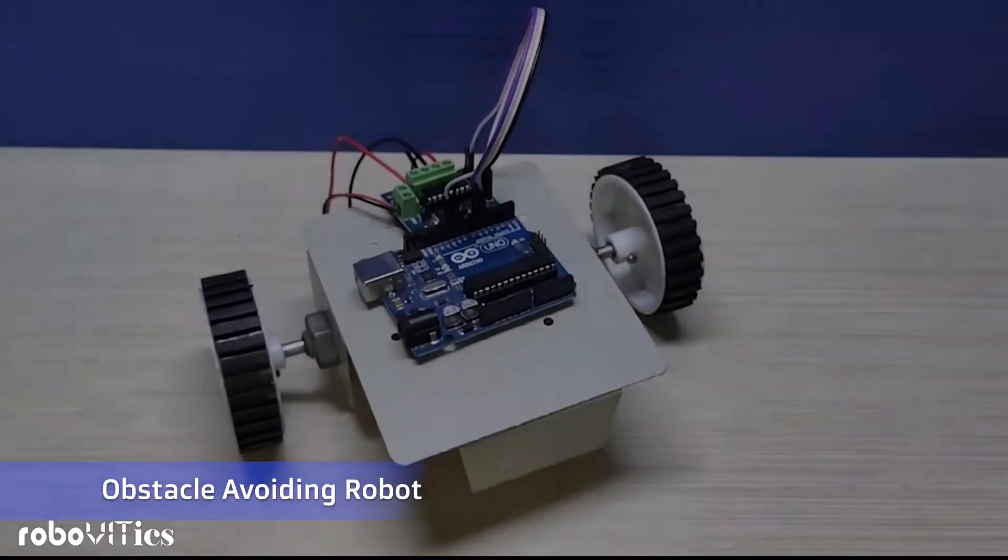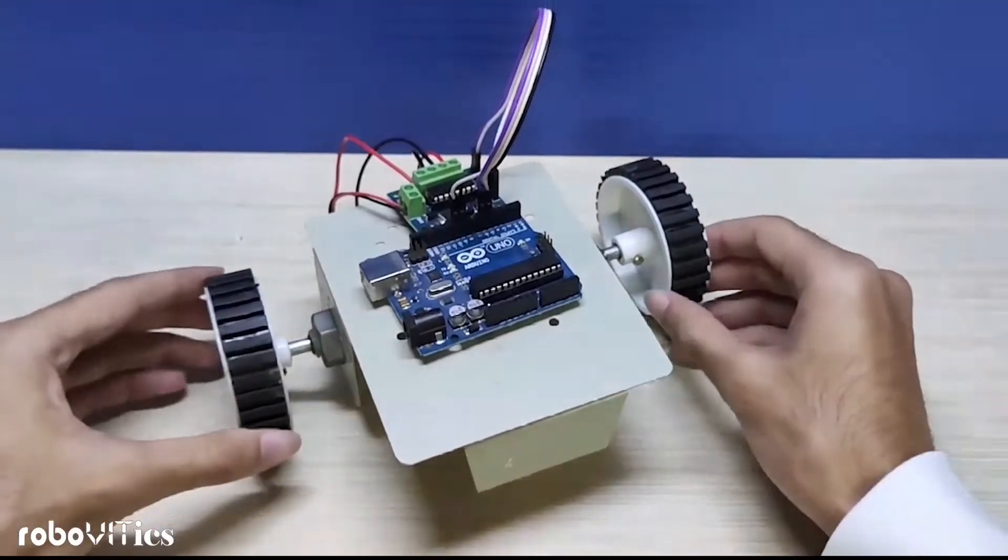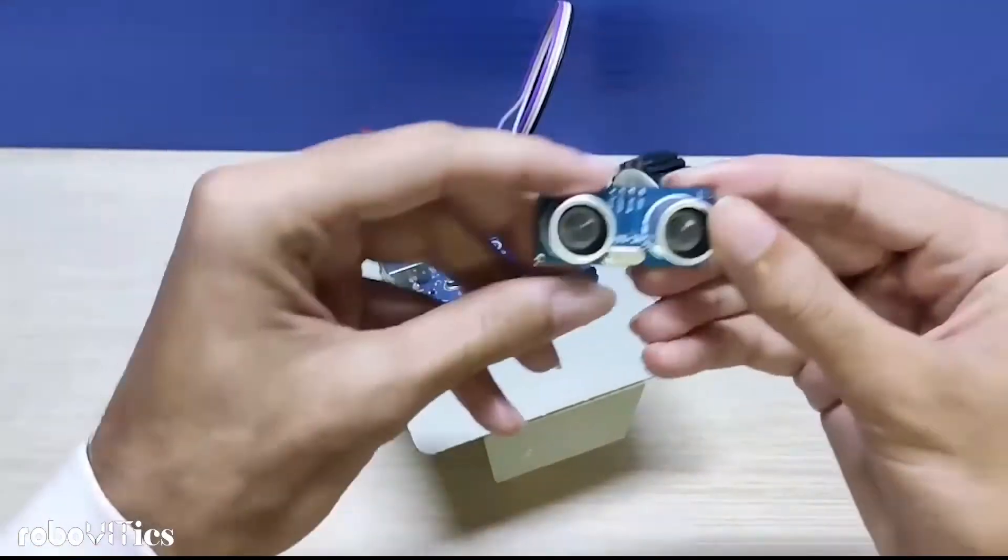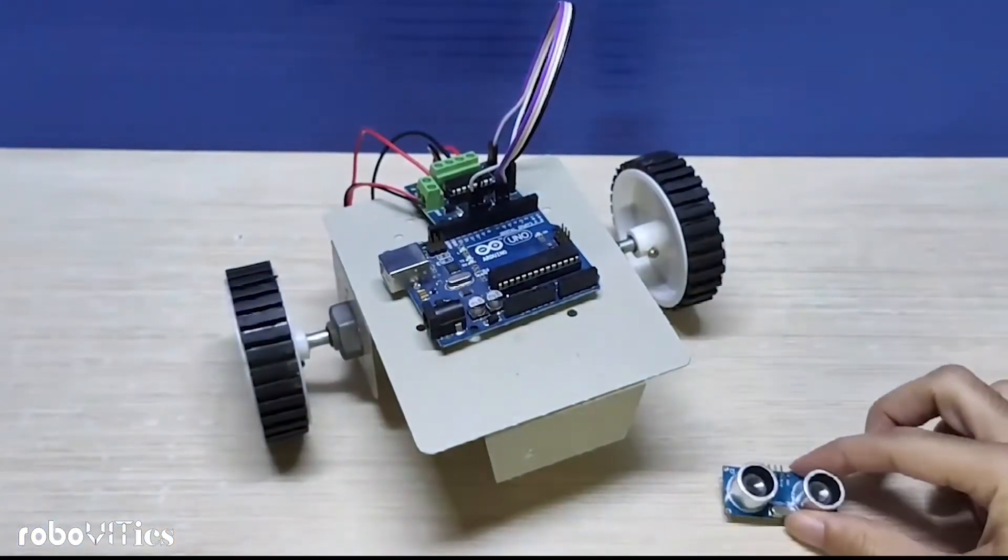Now that we are done with our laptop control bot, the next bot that's coming up is the obstacle avoider bot for which we need an ultrasonic sensor along with four male to female jumper wires.